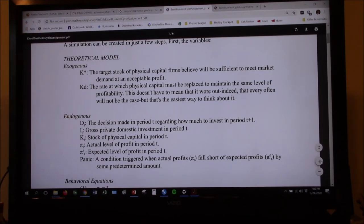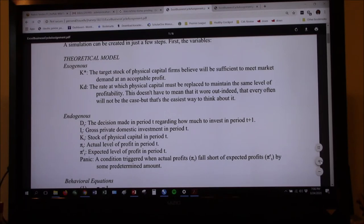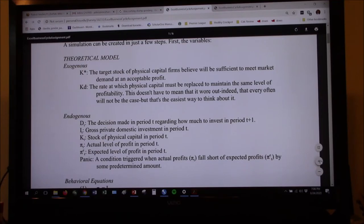The exogenous variables will be the target stock of physical capital that firms believe will be sufficient to meet market demand and an acceptable profit. For example, if we are restauranteurs, then there's going to be a certain number of restaurants, and we're going to be measuring it in dollar values, of course, but a certain number of restaurants where we believe, okay, well, that's all that we can possibly build and still be profitable in Fort Worth, that adding one more restaurant is going to cut into the profits and one of them is going to have to shut down. So there's some target level that entrepreneurs have, we're assuming.